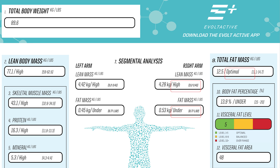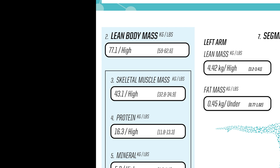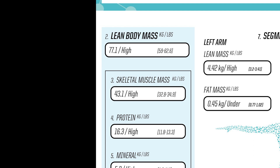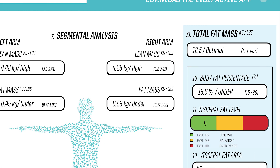It is important to remember that you may want to read high in the data points relating to your lean body mass, particularly if your goal is athletic in nature. Your scan will provide you with a total weight at the top, which is made up of essentially a lean body mass at number 2 and a total fat mass at number 9.